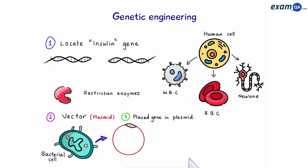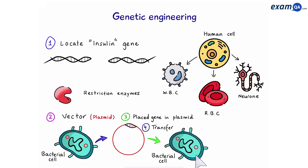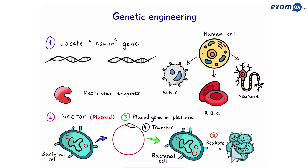Now we need to transfer this plasmid into a bacteria. We've produced a bacteria that has human DNA inside it — in particular, it has the insulin gene. So we're going to let this bacteria multiply to make lots and lots of copies. Now we have an army of bacteria, and all the cells within this army have the insulin gene. We let them make insulin, then we extract it, put it into bottles, and give it to our patients.